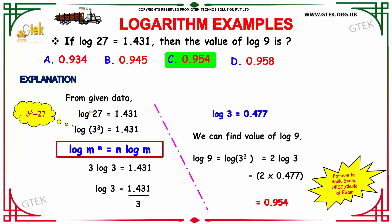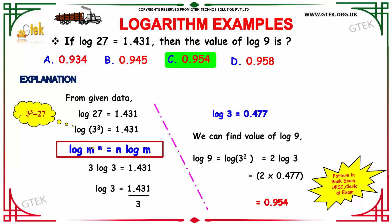We are going to derive the answer from the given data. The value of log 27 is 1.431. Since 27 can be written as 3 to the power 3, we have log of 3 power 3 equals 1.431. By the property log m to the power n equals n into log m, we write 3 into log 3 equals 1.431. Taking 3 to the right-hand side, log 3 equals 1.431 divided by 3, giving log 3 equals 0.477.